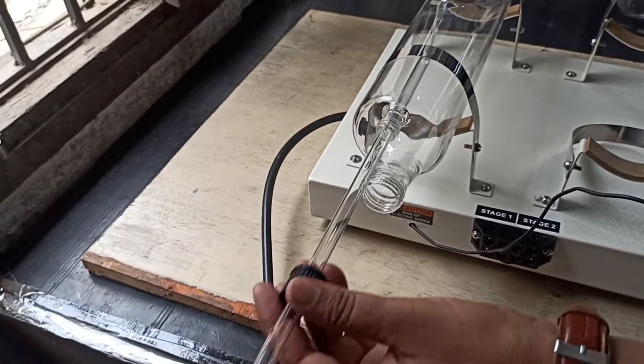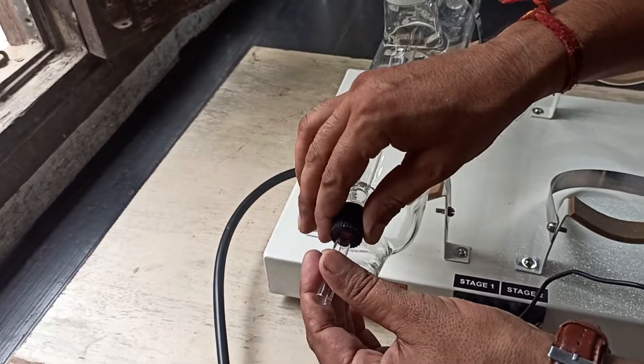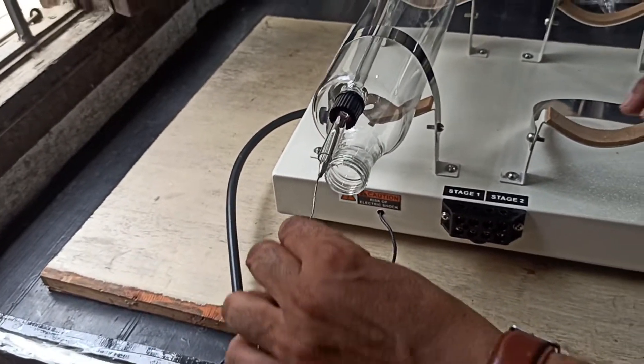Put the sensor probe into the sensor support glass tube and insert the sensor support tube into the first stage boiler.